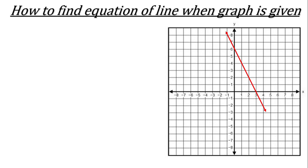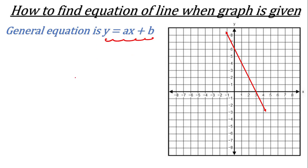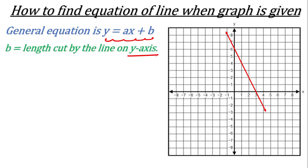The general equation of the line is y = ax + b. Here, b is the length cut by the line on the y-axis — remember, it is only on the y-axis. For example, in this graph you can see this red line is cutting the y-axis at 6, so the coordinate is (0, 6). So the value of b is 6.